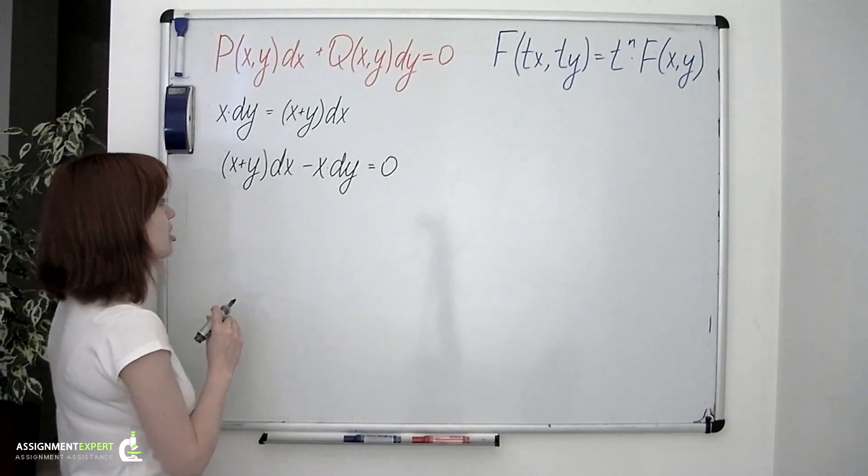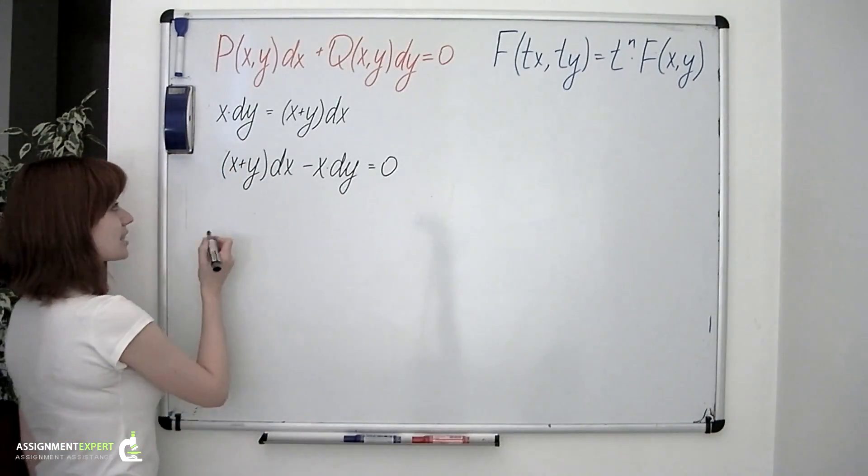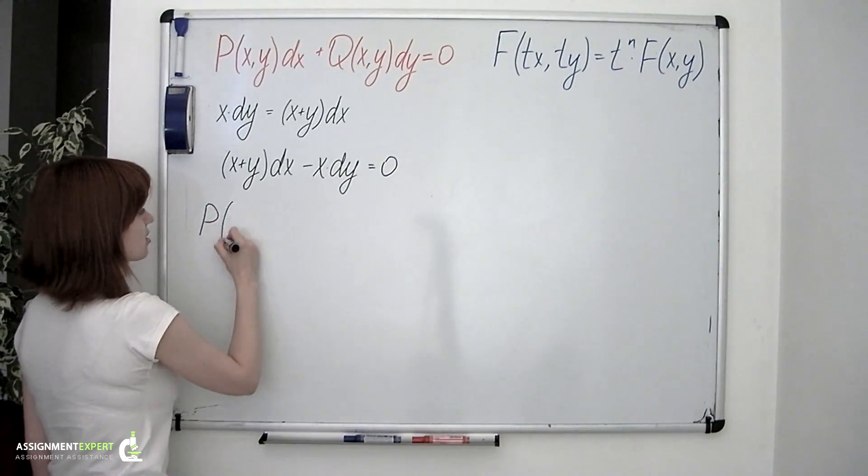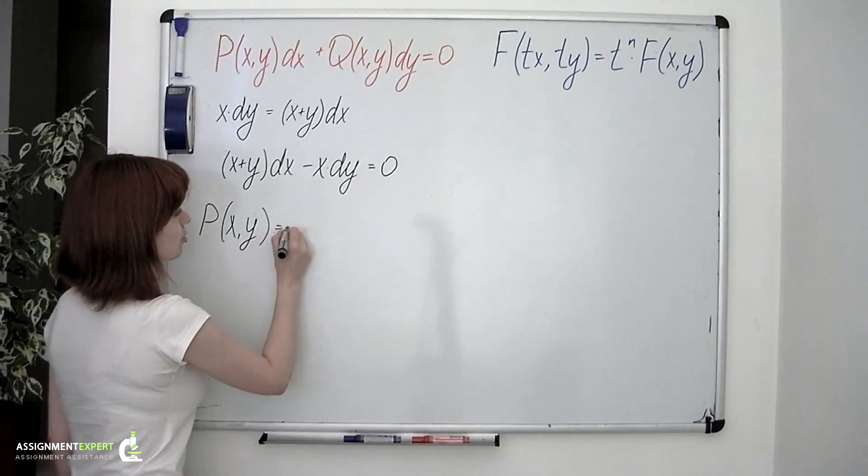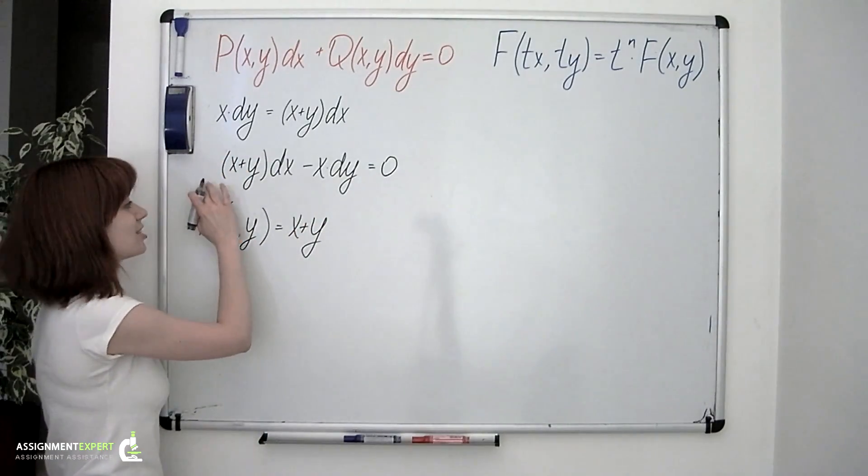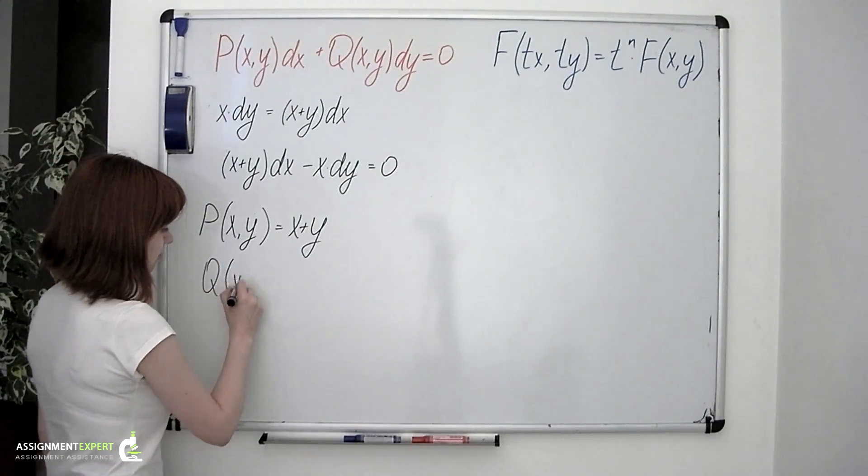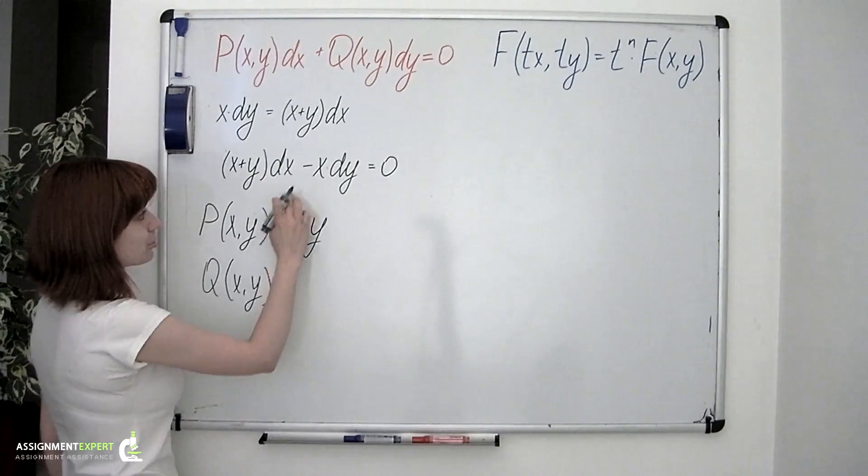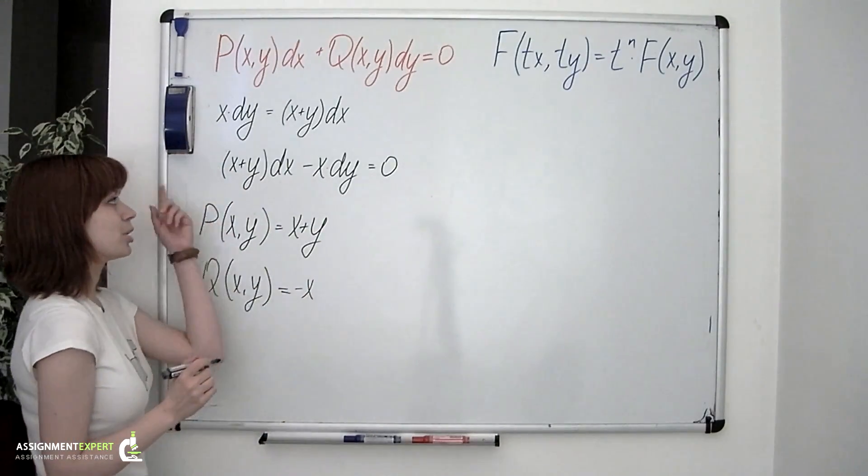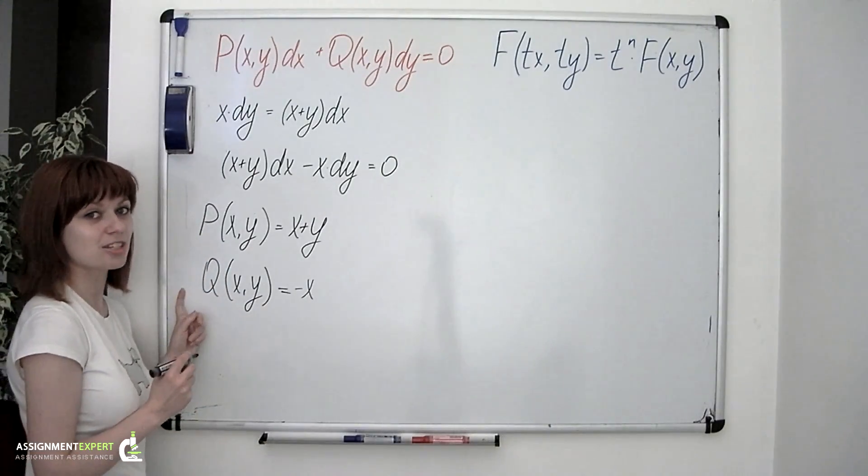Our second step is to check if this equation is homogeneous or not. Let's consider the functions P and Q. In this particular case, the P function is equal to x plus y. It's the function standing next to dx. And then there is the Q function which equals negative x. Now the equation is homogeneous if both P and Q functions are homogeneous of the same degree.